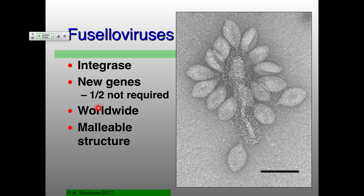To finish up on the Fuseloviruses: about half their genes are not required, we find them throughout the world, and how they get there — near volcanoes, which erupt and potentially spread viruses across the world. Only half the genomes are conserved, meaning they probably only get from one spring to another on a relatively rare basis and have been able to evolve separately. The structure is really quite malleable — changing VP3 gives a more cigar shape — and they also have these viral integrase genes.